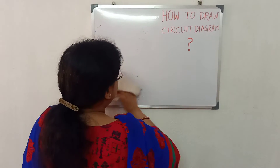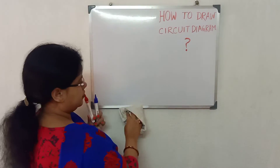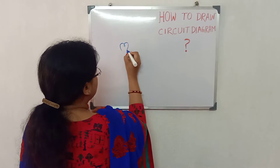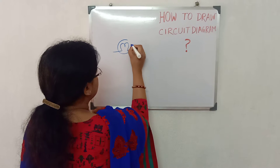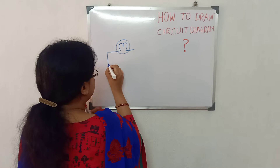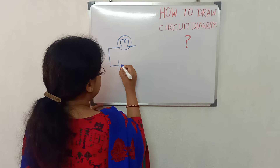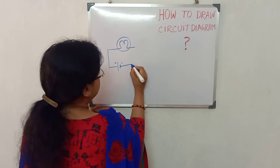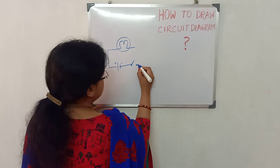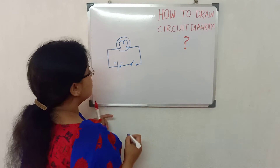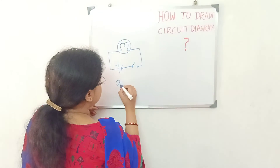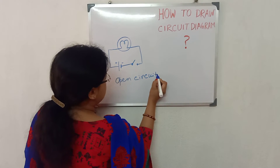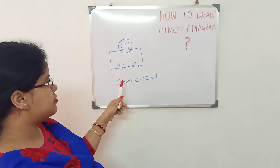Now I am showing you how to draw a circuit diagram. I am drawing a bulb. And you can understand this is a single cell — the longer line is the positive terminal, the shorter line is the negative terminal. This is a switch. As the symbol shows, this is an open switch. So this is an open circuit — the bulb is not glowing and electricity is not flowing.